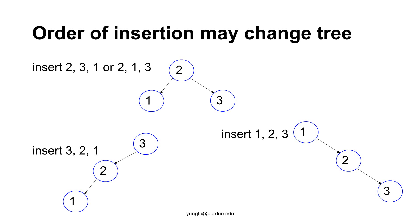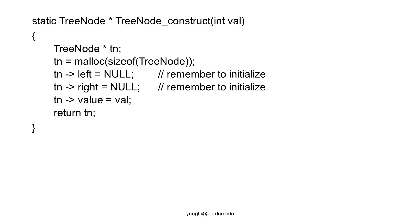If the order is 1, 2, 3: the root is 1, 2 is the right child of 1, and 3 is the right child of 2. Now, let's study how to write the insert function. We need to study two functions. The first is the node construction function, which takes one integer argument. The function allocates memory for a tree node.